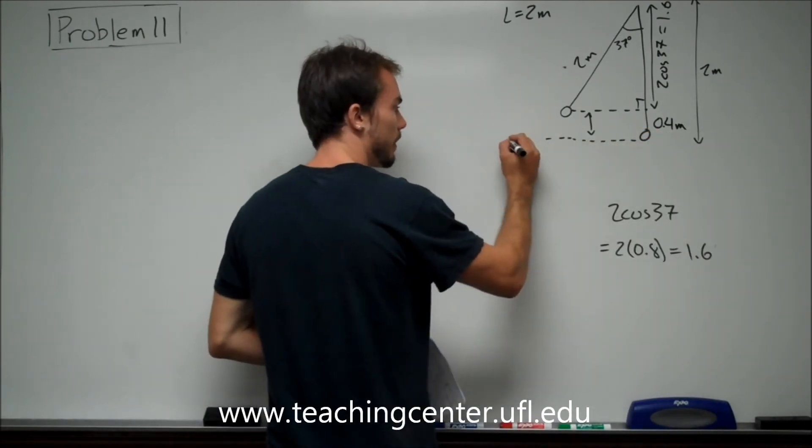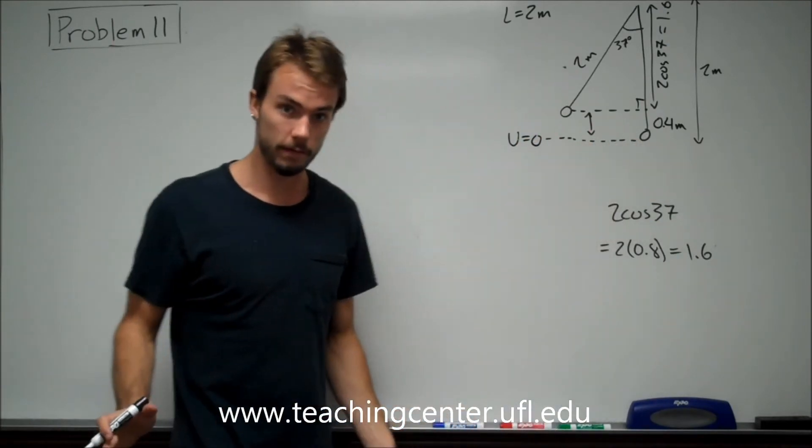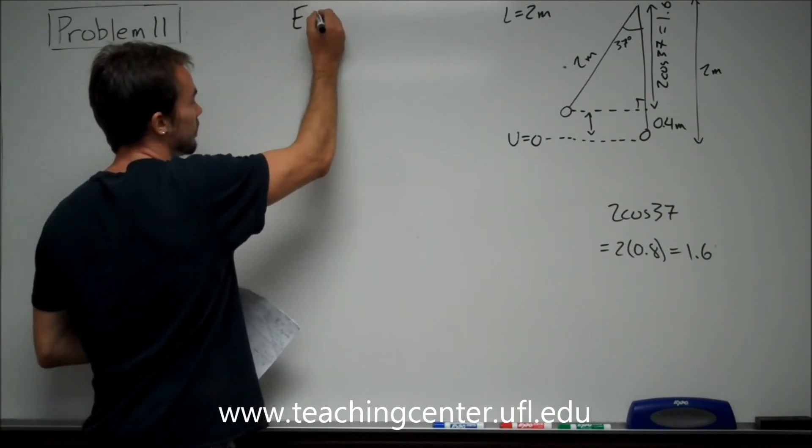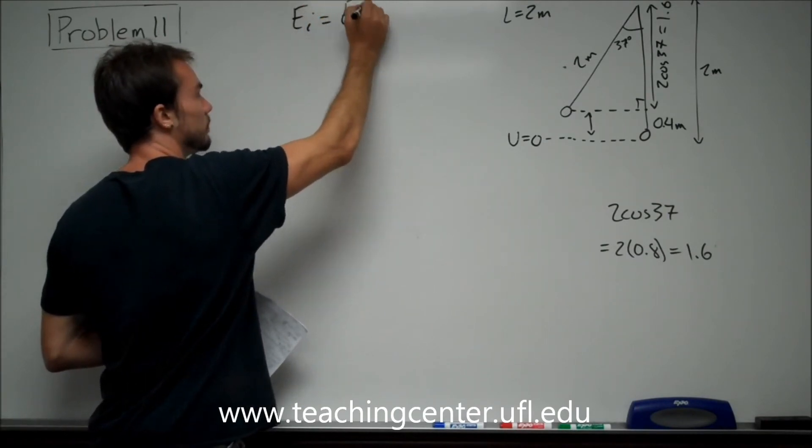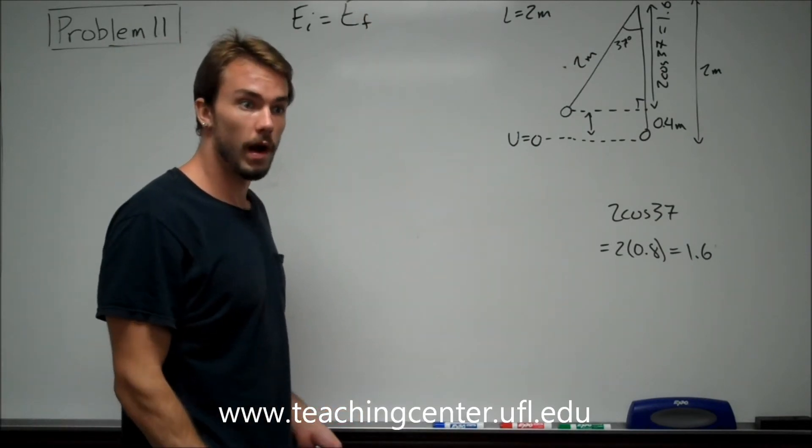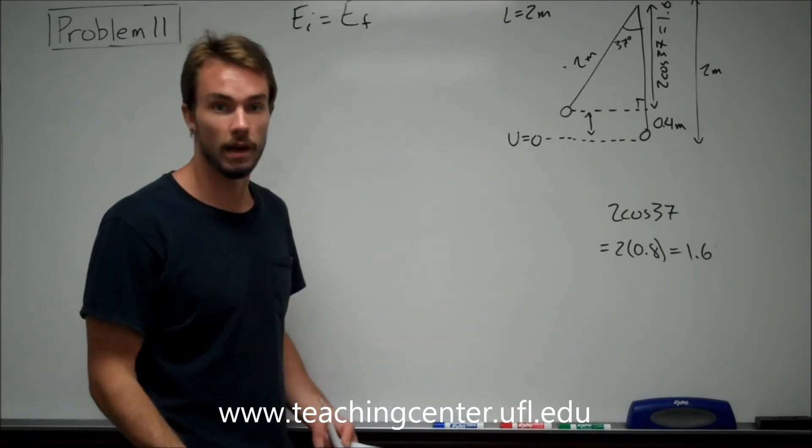What I'm going to do is I'm going to set our datum right there, say we have no potential energy when the pendulum is at its maximum velocity at the bottom. And we say our energy initial is going to be equal to our energy final. We have no external forces besides force of gravity. We have no springs, we have no friction. So all we're dealing with is potential kinetic energy at this point.